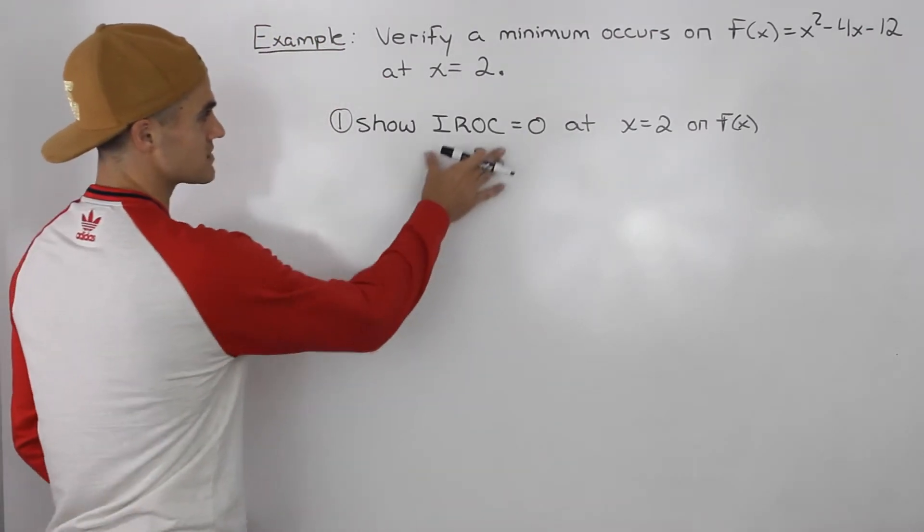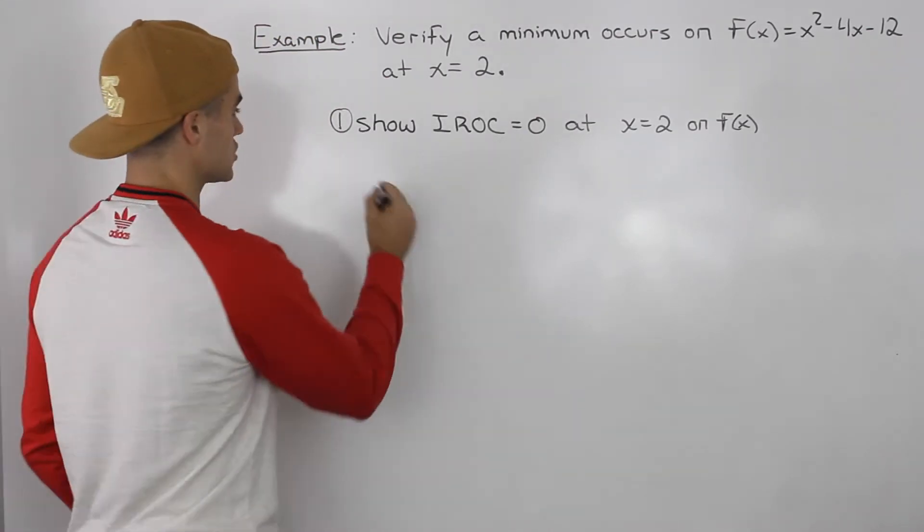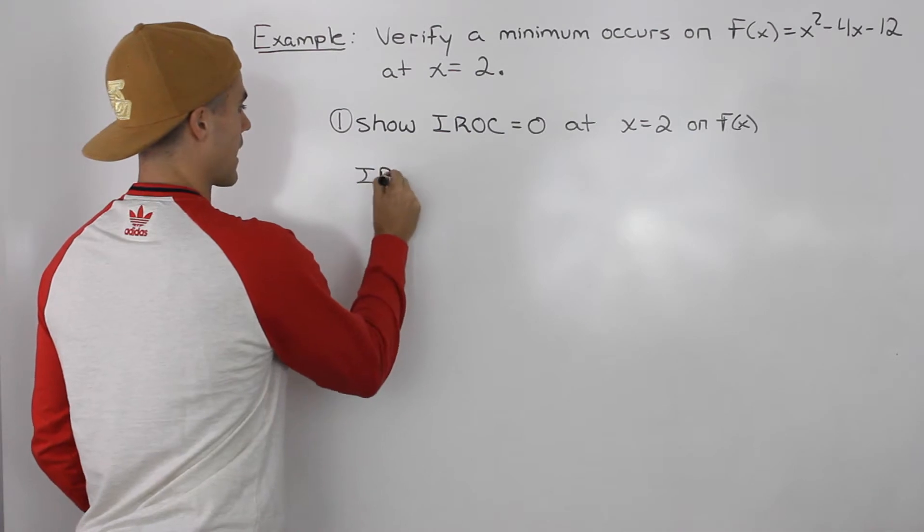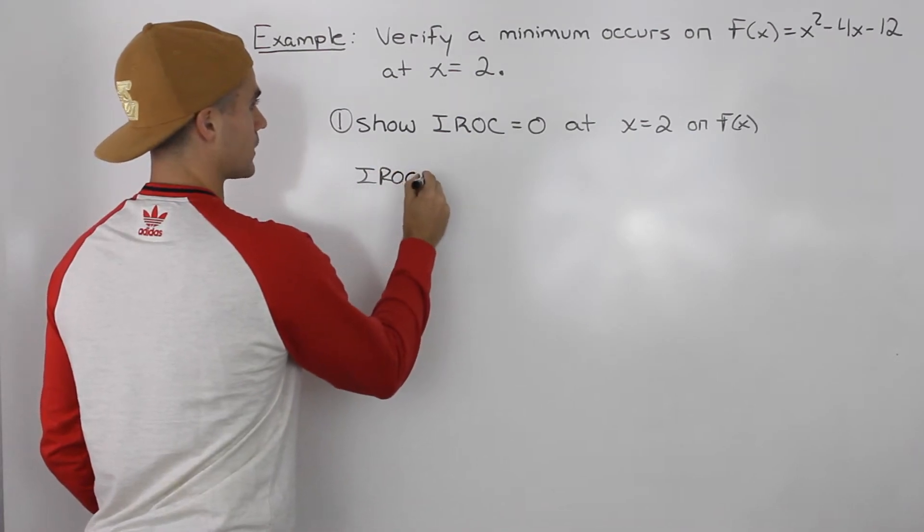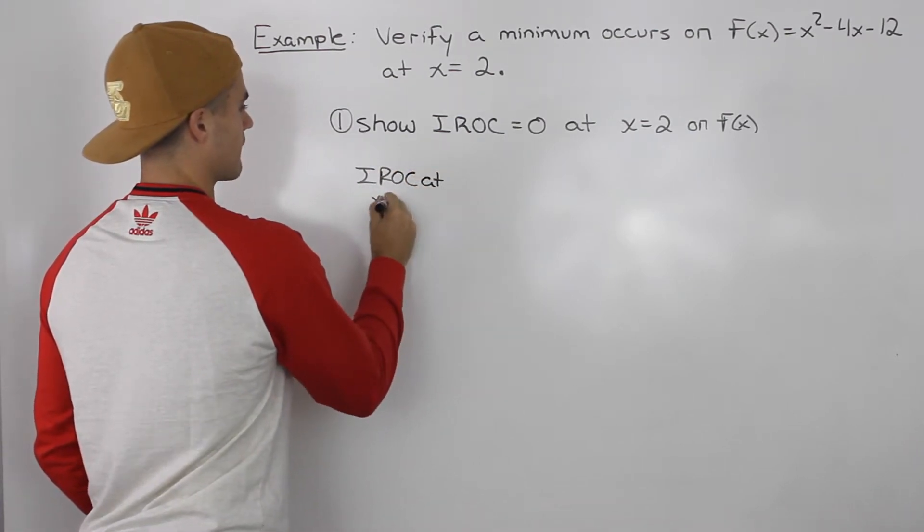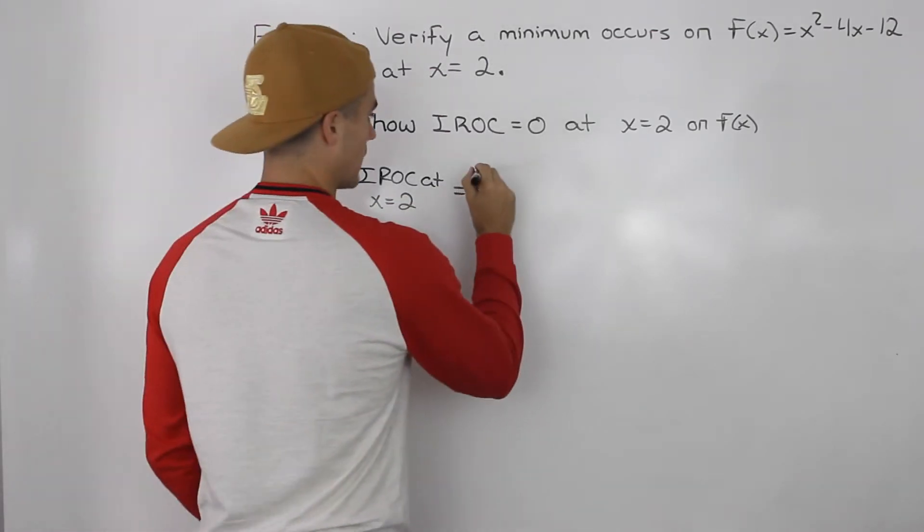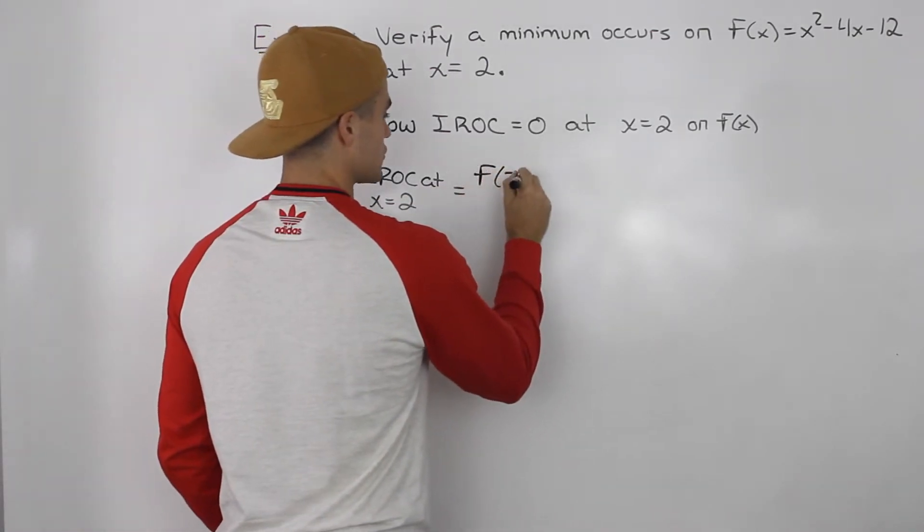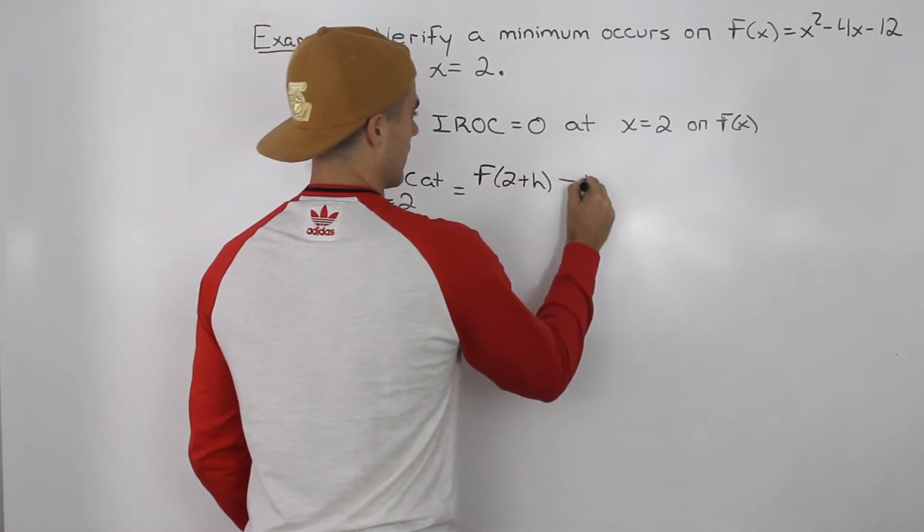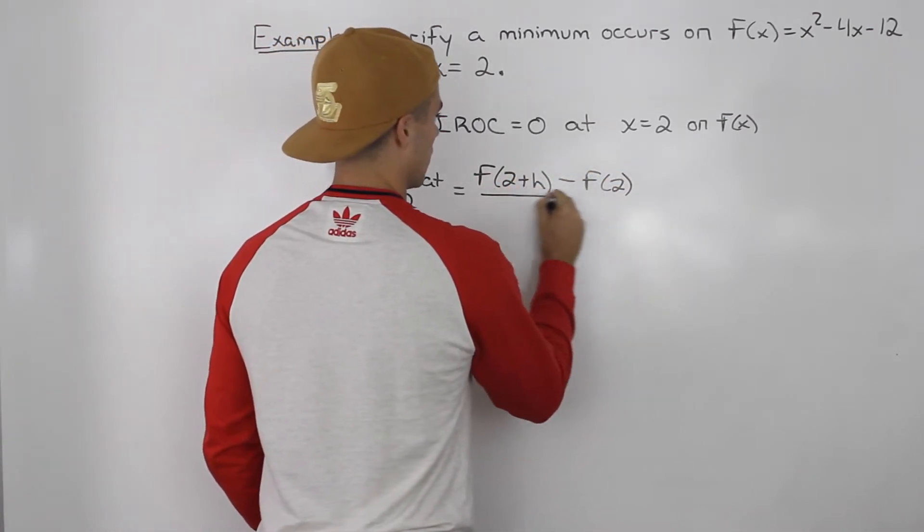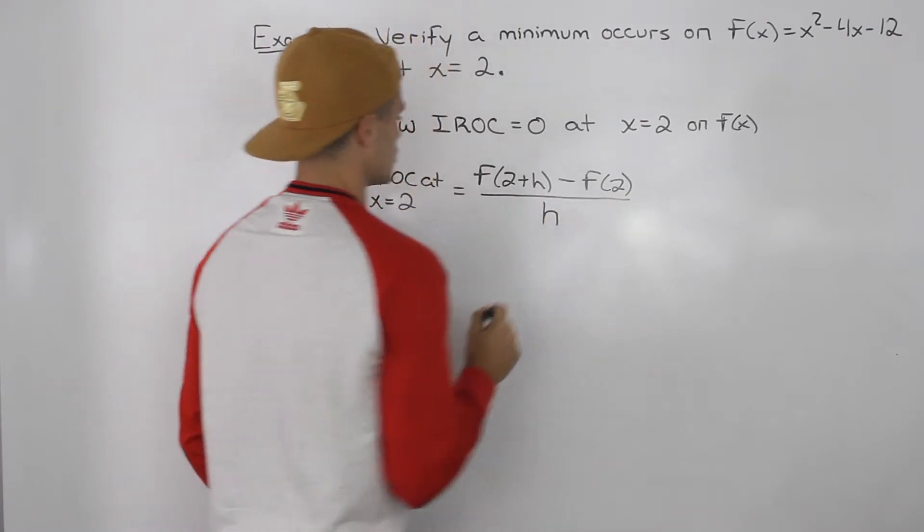There are different ways to find the instantaneous rate of change. The way that I'm going to do it is using the difference quotient. So I'm going to find f(2+h) - f(2) all over h.